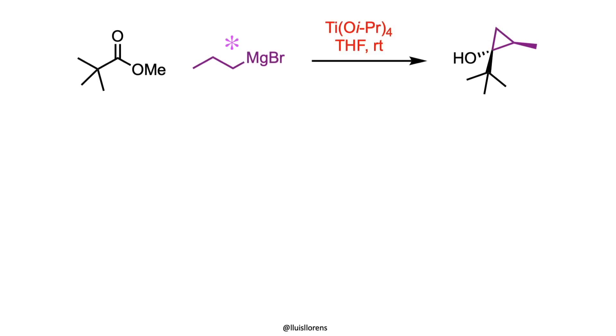When more complex Grignard reagents are employed, 1,2-disubstituted cyclopropanols can be obtained with good diastereoselectivity.